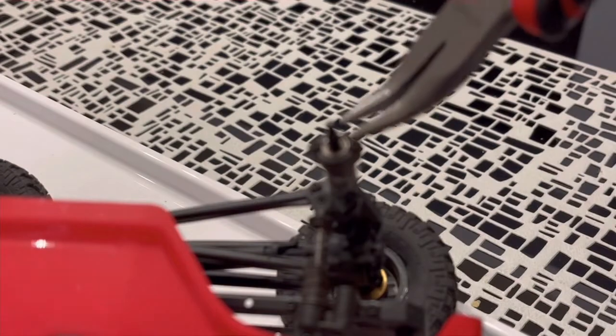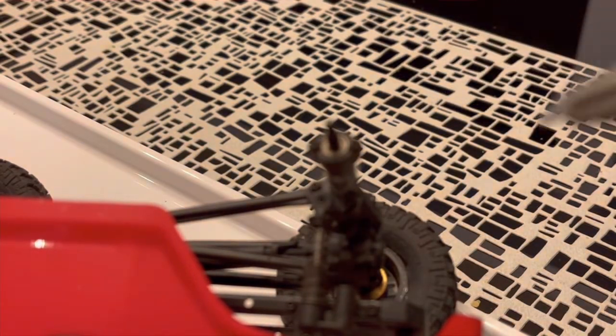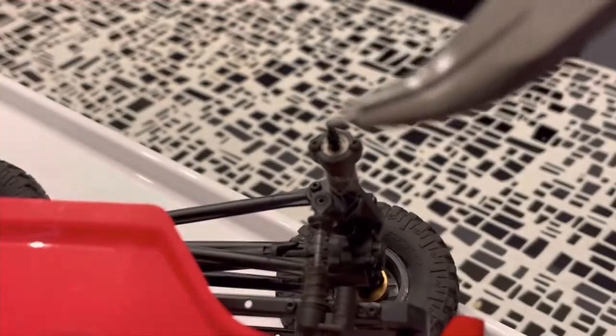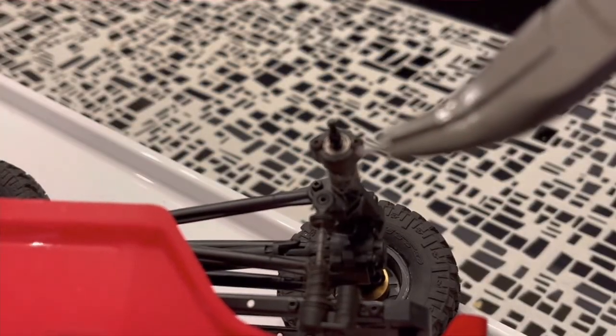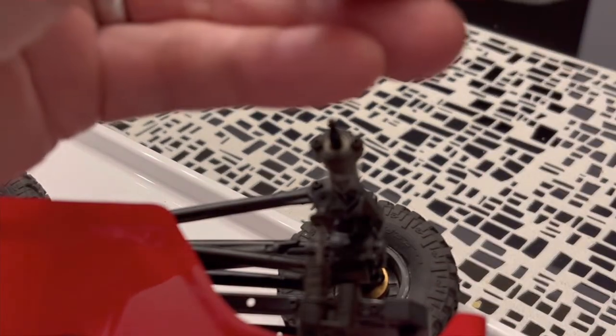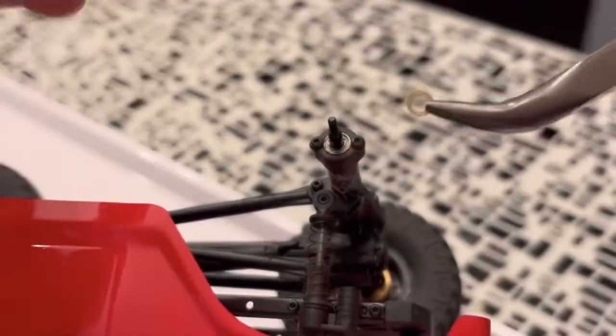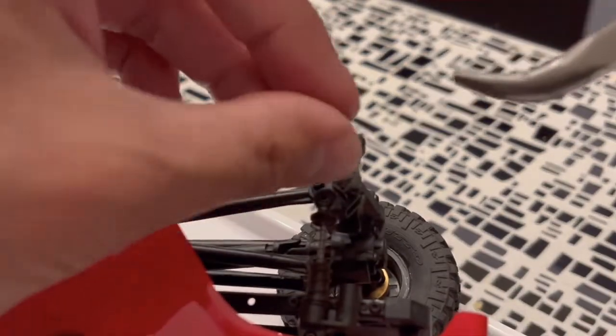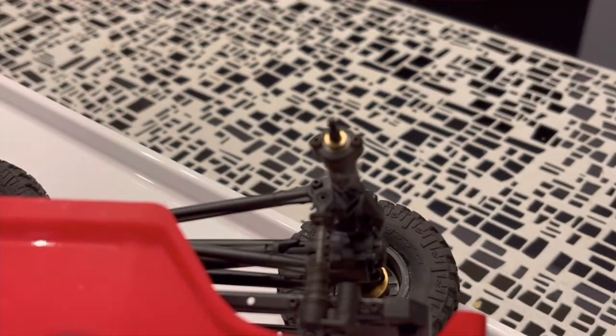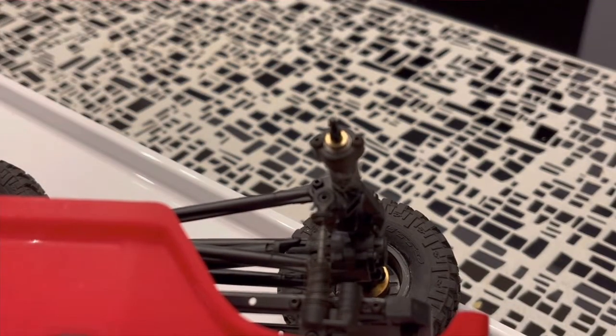This tiny little rod right here, you're going to pull that out. The reason we're going to pull that out is because your set of weights will come with a washer that looks like this and we're going to put this washer on top of the axle, slide that all the way down so that it's flush.